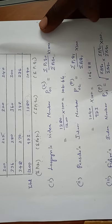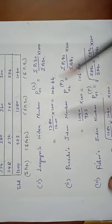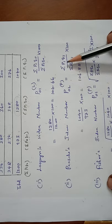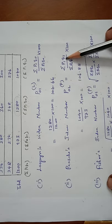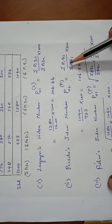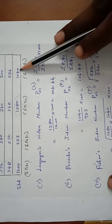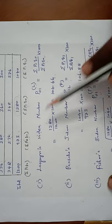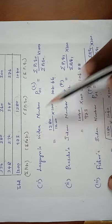Next, P01 Paasche equals sigma P1Q1 by sigma P0Q1 into 100. Sigma P1Q1 is 1040, sigma P0Q1 is 973. So 1040 by 973 into 100 equals 106.88.